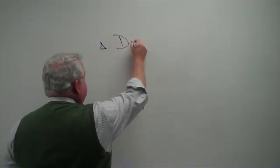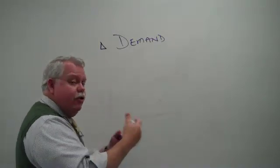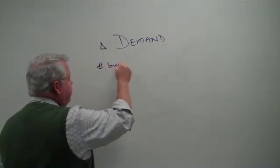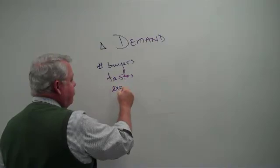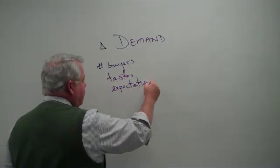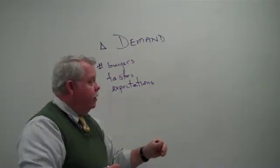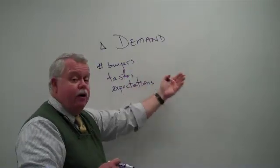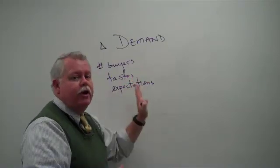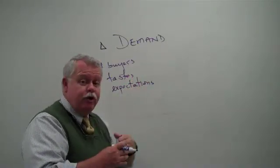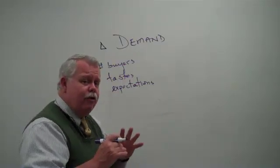The first three are pretty intuitive. If you have a change in the number of buyers, their tastes or preferences, or their expectations, a change in any one of those or some of them together will shift the demand curve. More buyers increase demand. Fewer buyers decrease demand. More popular good increases preference for the good, increases demand. Expectations may shift the demand to increase or decrease. It depends on the particular expectations at work. But those are pretty straightforward.